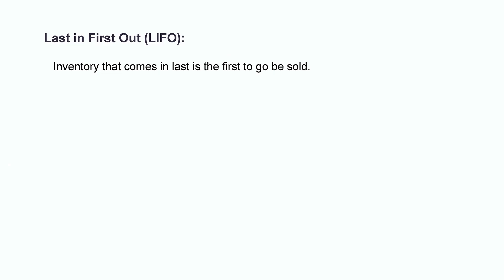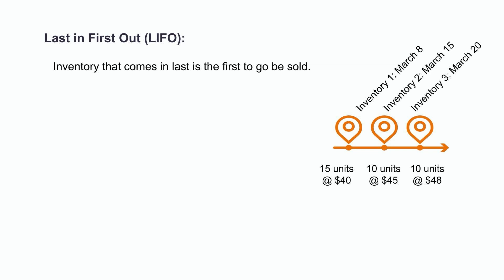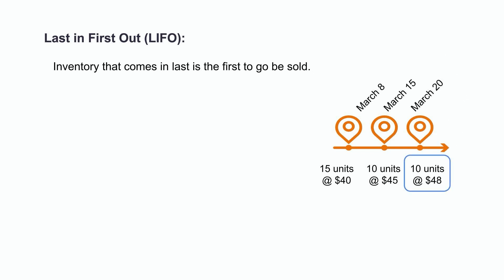LIFO stands for last in, first out and is an inventory valuation technique that companies use to track both their inventory and cost of goods sold. Under this cost flow assumption, it's assumed that the inventory that has come in last is the inventory that is sold first. For example, let's say a company buys inventory at three points throughout the month of March. On March 25th, they make their first sale of the month, selling eight units of inventory. Under the last in, first out method, they'll assume that all eight units sold were from the last batch of purchases on March 20th.